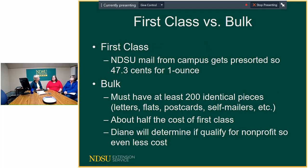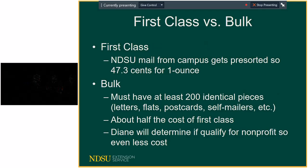For bulk mail there are requirements: you must have at least 200 pieces, they must be identical — all letters, all flats, or all postcards. That will run about half the cost of first class mail. I will determine whether you can get a non-profit rate, which is even less than the regular bulk rate. Both are quite a bit less than first class — running maybe about 20 cents a piece depending on where it goes.